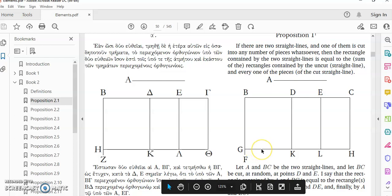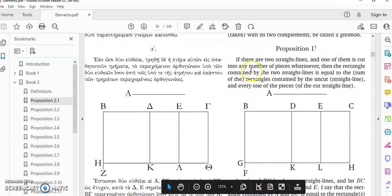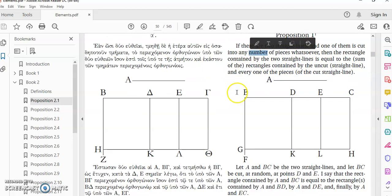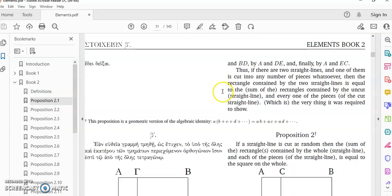It says that if there are two straight lines and one of them is cut into any number of pieces... Now, remember, number does not mean infinitely many. And this is very important because the stupid mathematics professors of the mainstream believe that you can distribute multiplication over addition with infinitely many operands. That's absolute rubbish. You cannot distribute multiplication over an infinite series.